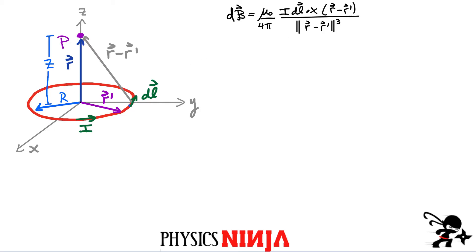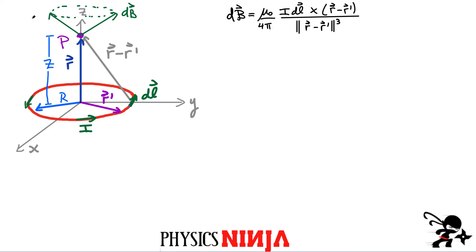This is a cross product, so any vector that results from a cross product has to be perpendicular to both of these. Here's r minus r prime, and here's dl. A vector that's perpendicular to both of those should look something like this — this should be the direction of the little element of magnetic field produced just by this segment. We then have to look at all the contributions from every little segment going around that loop. What that's going to do is basically trace out a cone. If I look at the small element over here, that would produce a small magnetic field that looks in this direction.